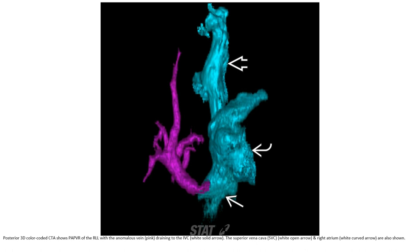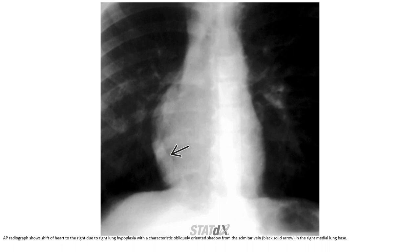MRA shows partial anomalous pulmonary venous return of the right lower lung with anomalous venous drainage to the IVC. The superior vena cava and right atrium are also seen. AP radiographs show mediastinal shift to the right due to right lung hypoplasia, with a characteristic obliquely oriented shadow from the scimitar vein in the right lower lung field.